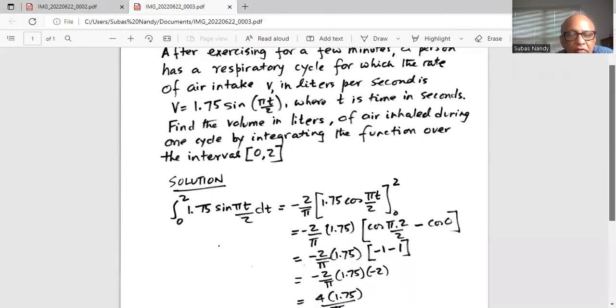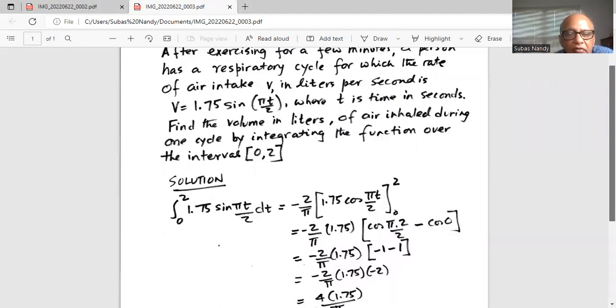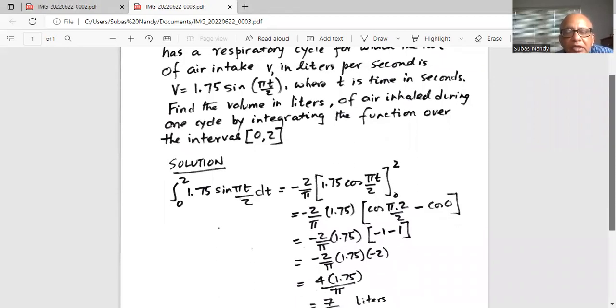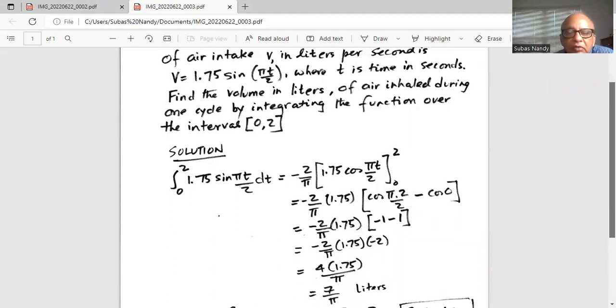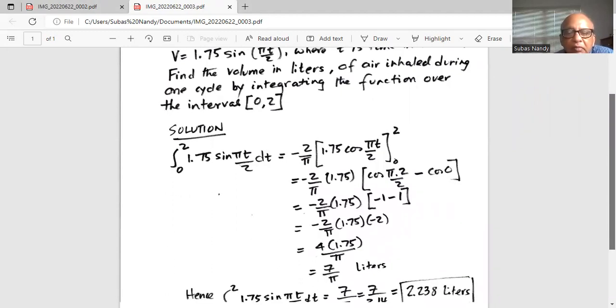So we have minus 2 over pi times 1.75 times minus 2. Two negatives make it positive. So 2 times 2 is 4. 4 multiplied by 1.75 divided by pi.